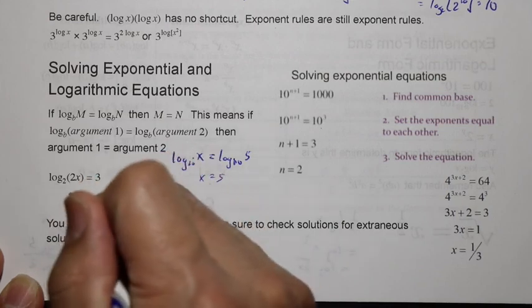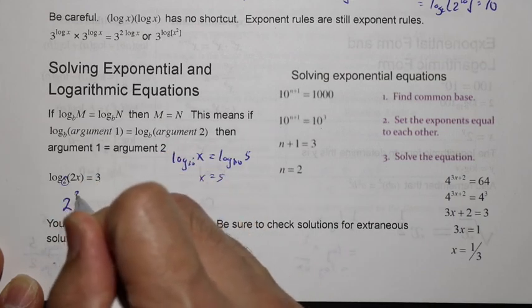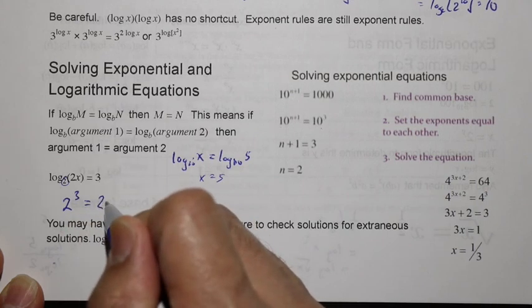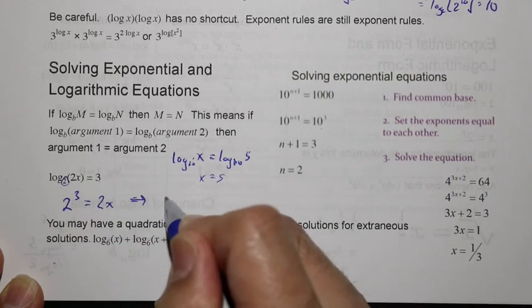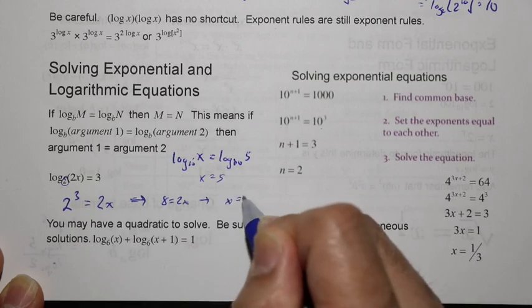So here we have a log form here, but we can take this 2, this base 2, raise it to this exponent 3, and that's equal to the argument of the log. This is 2x. So we can then say that 8 equals 2x, and that means that x equals 4.